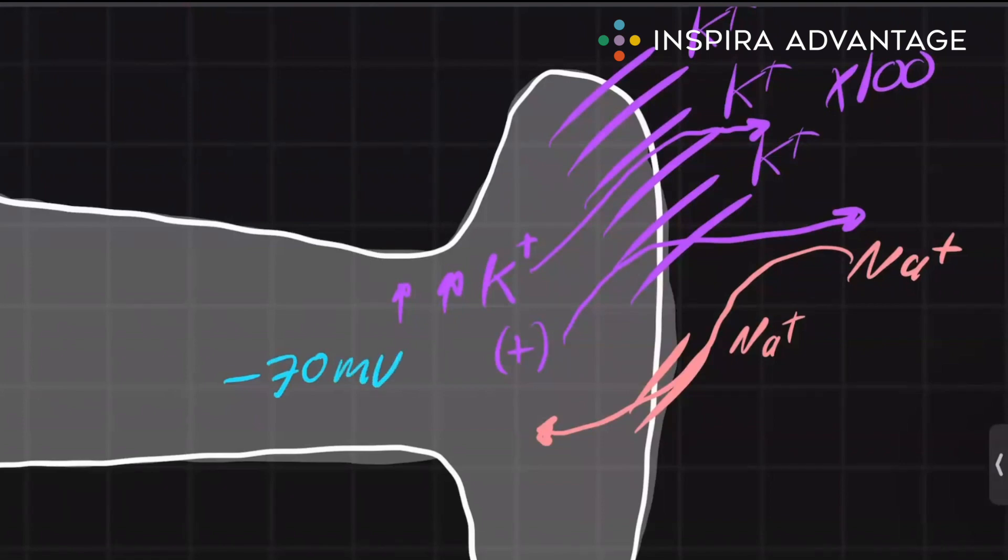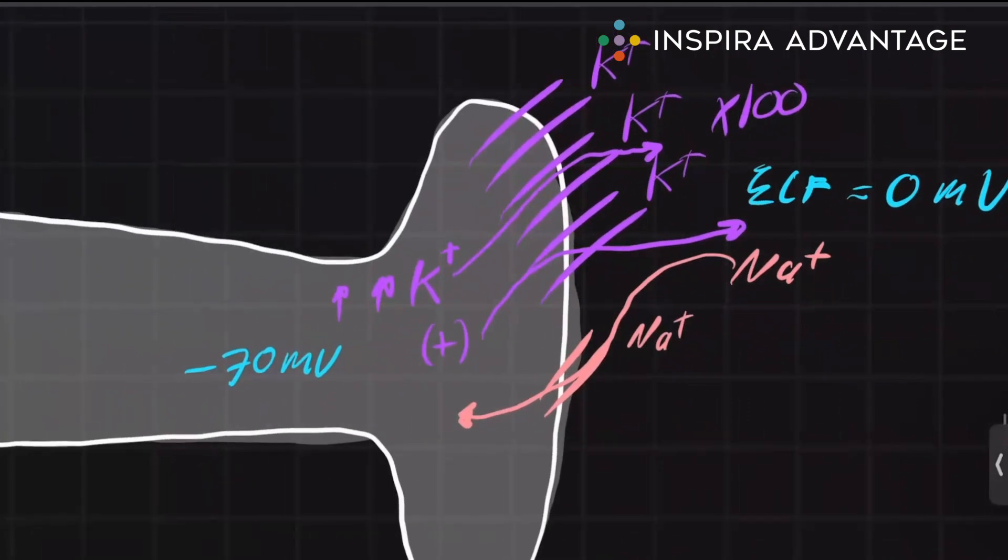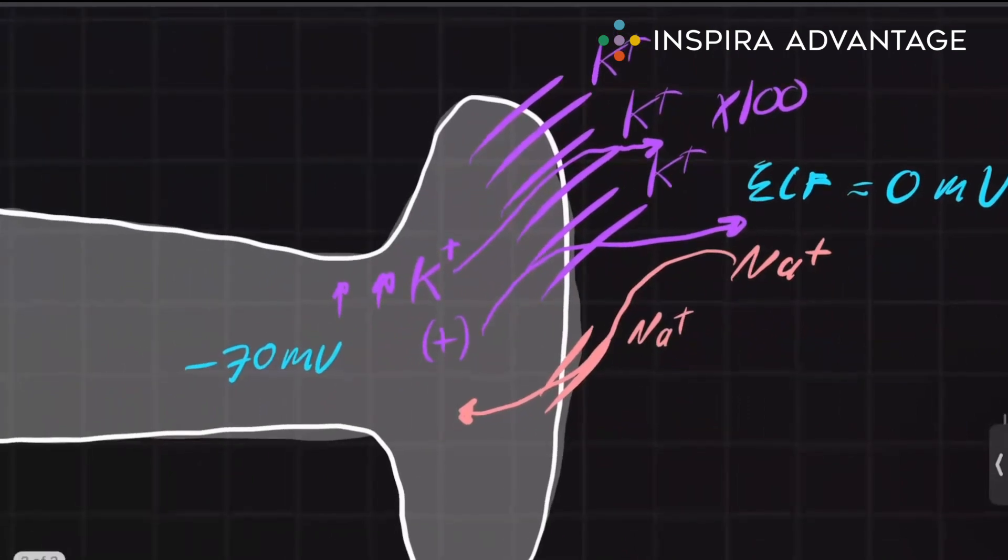Which again, if you remember from earlier, the ECF is set to zero millivolts. This is just by convention. The ECF is always zero. This helps us compare apples to apples really.